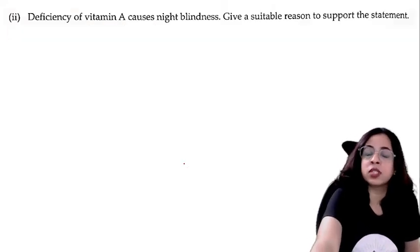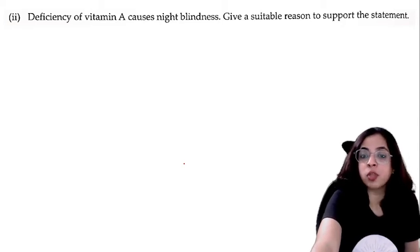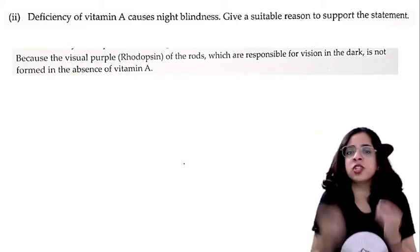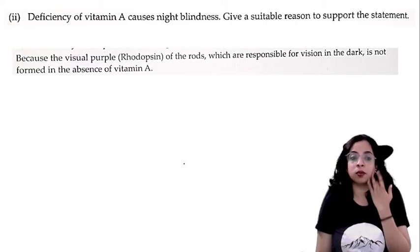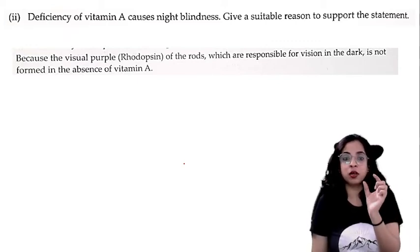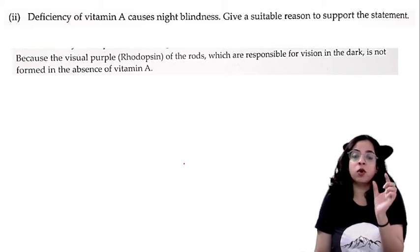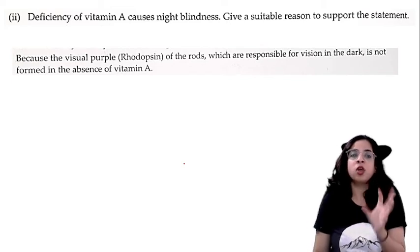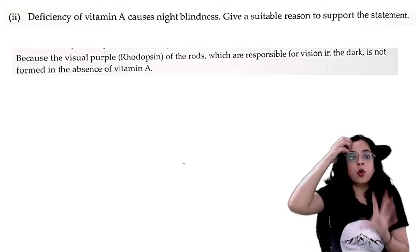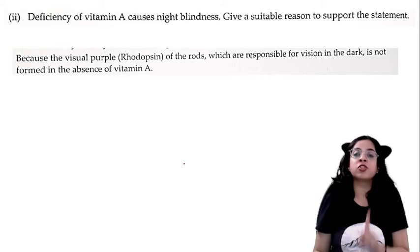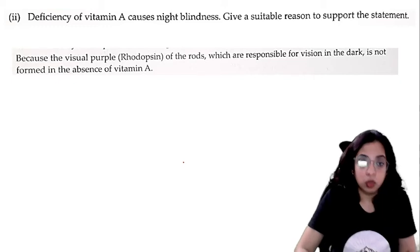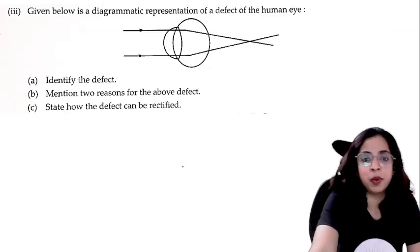Deficiency of vitamin A causes night blindness — give a suitable reason to support this statement. Because the visual purple rhodopsin, present in the rod cells of the retina, which is responsible for vision in the dark, is not formed in the absence of vitamin A. When there is no vitamin A, rhodopsin — the visual purple — is not formed, causing night blindness.